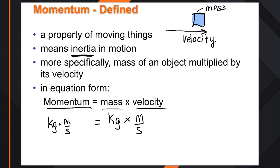The variables we use are straightforward. Mass begins with M, so we use M. For velocity we keep using V. There's a small problem though — we've already used the letter M, so we can't use that for momentum. In physics, we use a slanted P. Don't ask me why we use P — that's just the standard. So we use P for momentum.